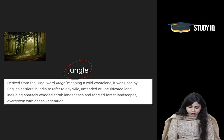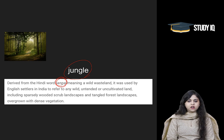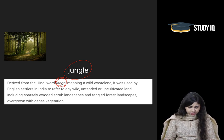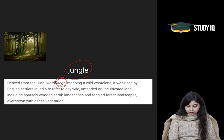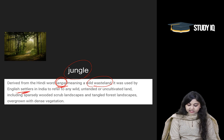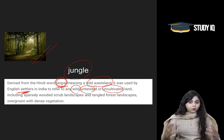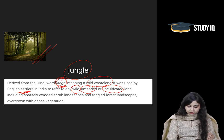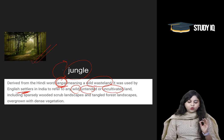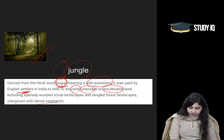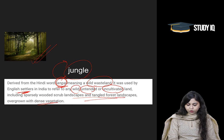Another word is 'Jungle', coming from the Hindi word 'jungle', which refers to a place with a lot of vegetation. It was derived from the Hindi word meaning a wild wasteland, as used by the English settlers — wild, untended, uncultivated land, as we can see in the image. This Hindi word 'jungle' came into English vocabulary to mean dense vegetation, a landscape with forests.